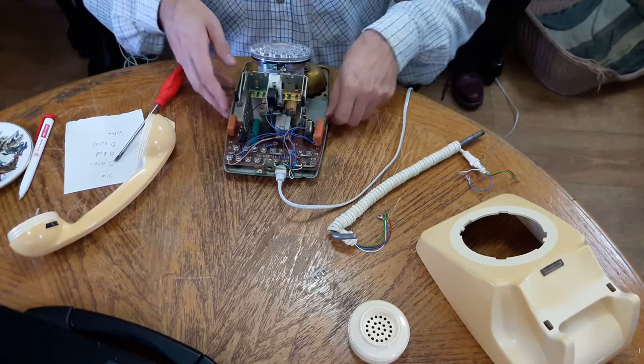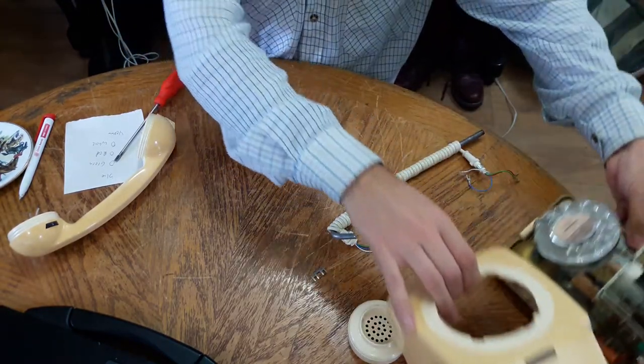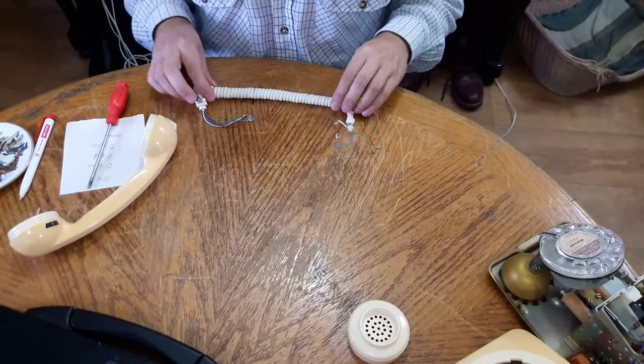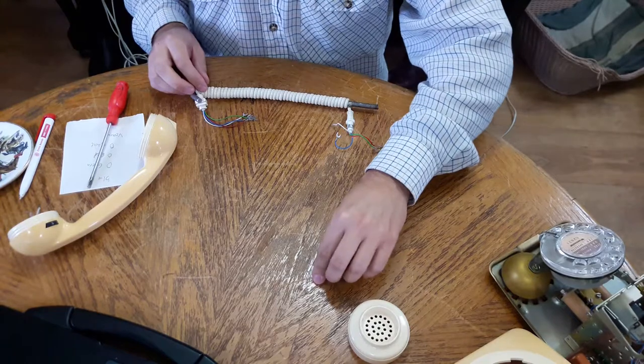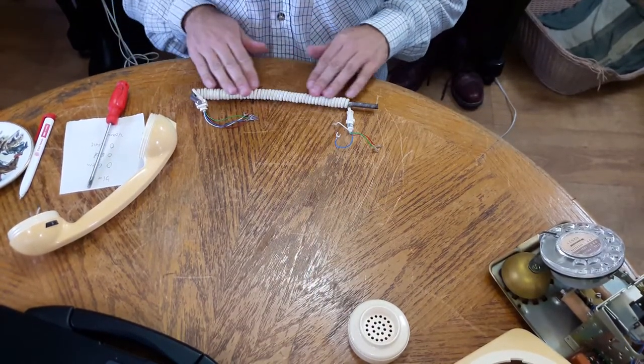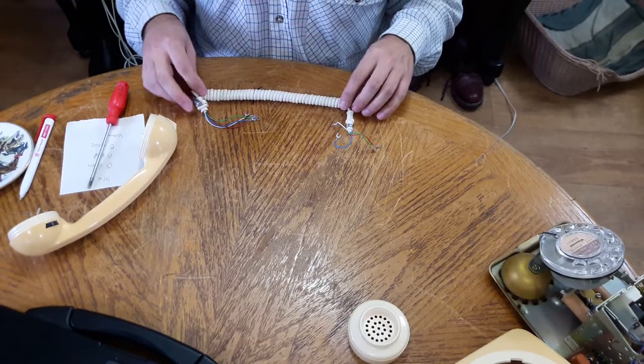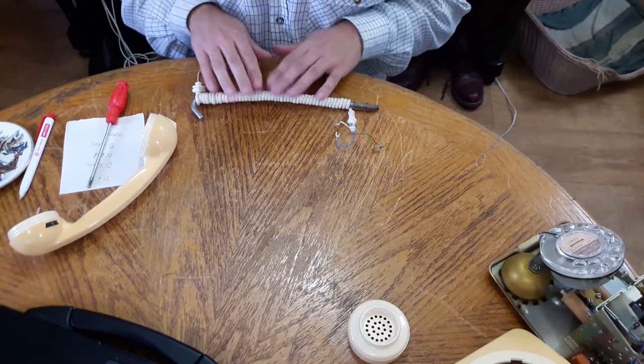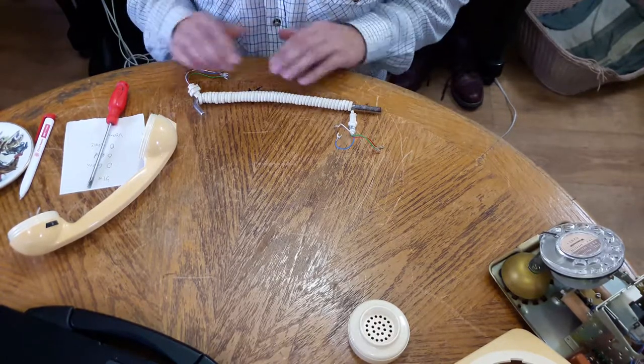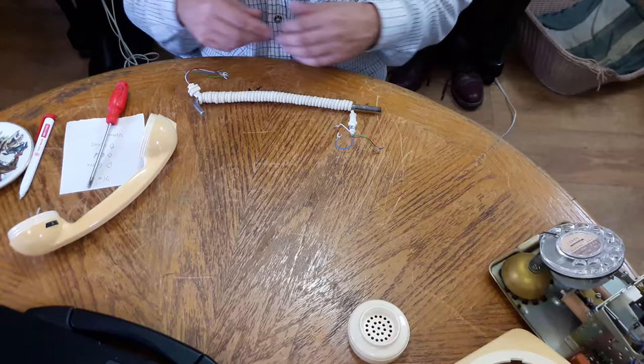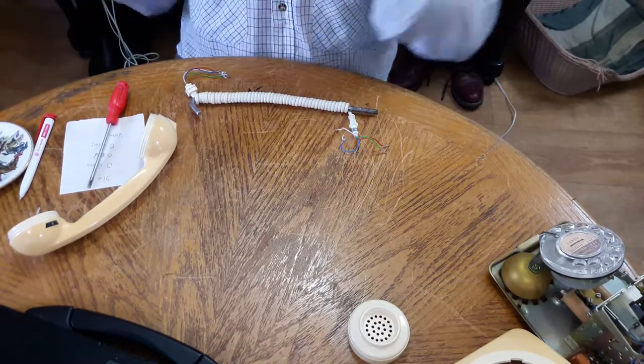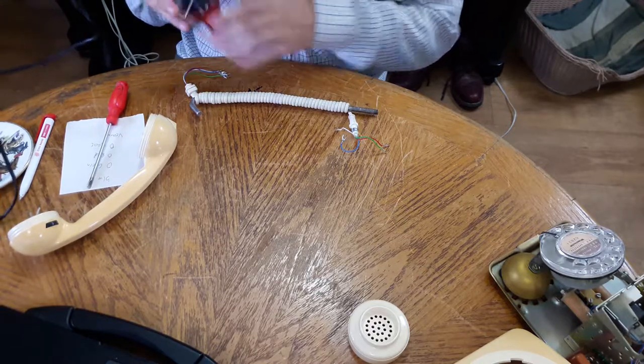What I'm going to do now is put this to one side and concentrate on this handset cord. I'm going to heat this up with my heat gun. I've wrapped it firmly around this steel peg. The idea is that once I heat this up it will keep its springiness and reform back.